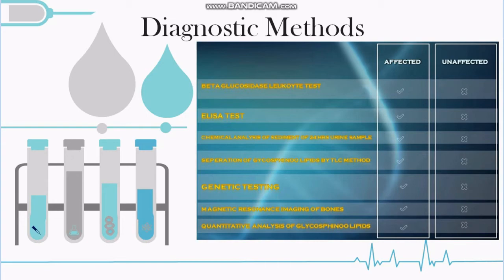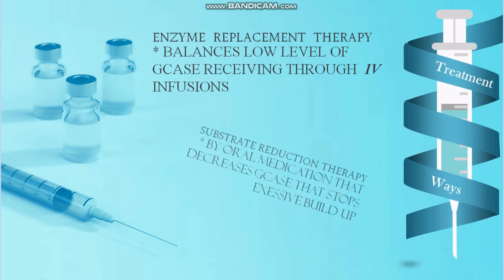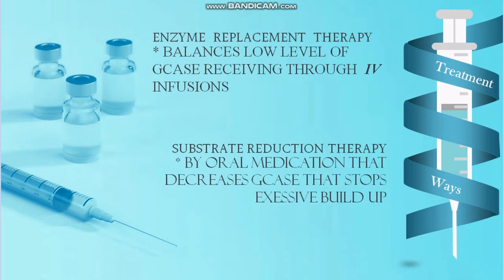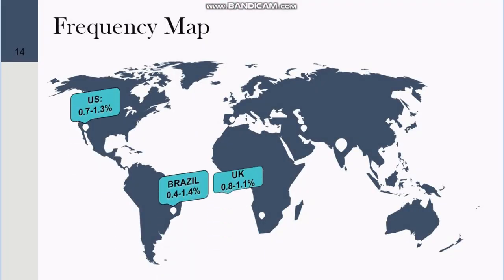Treatment methods include: Enzyme Replacement Therapy (ERT), which balances low levels of glucocerebrosidase received through infusions — three companies are producing the enzymes worldwide. Substrate Reduction Therapy uses oral medication that decreases glucocerebrosidase synthesis, stopping excessive build-up. A frequency map of the disease is also shown.